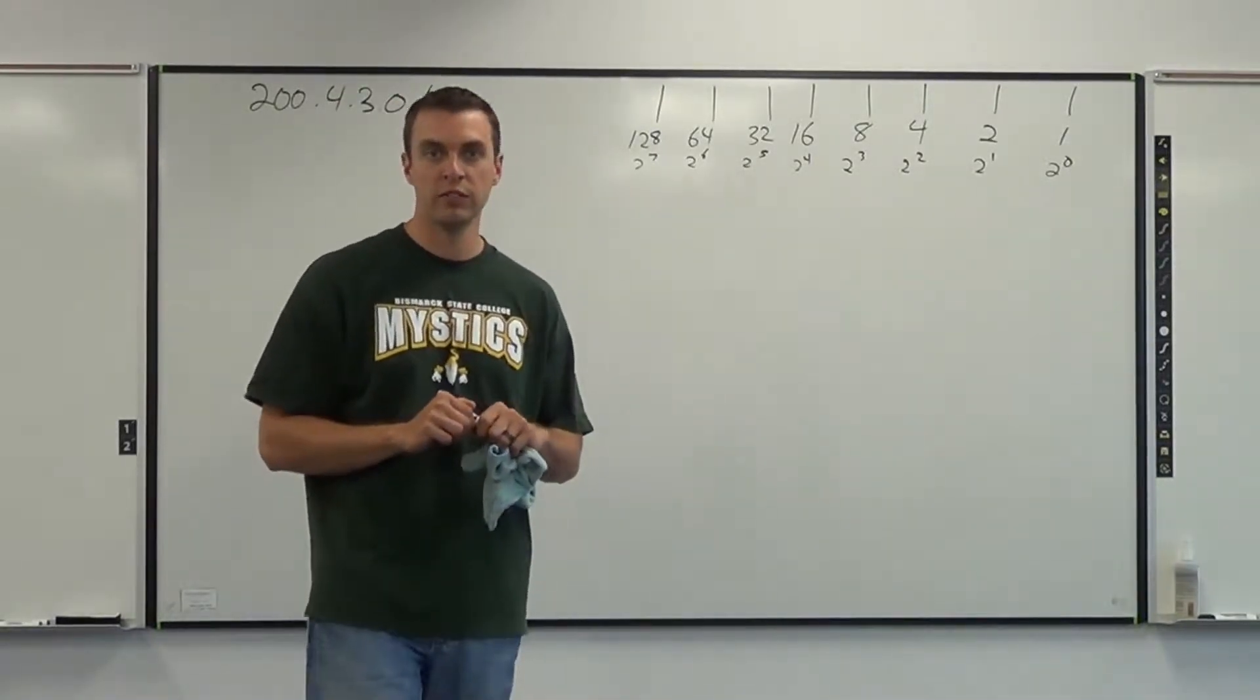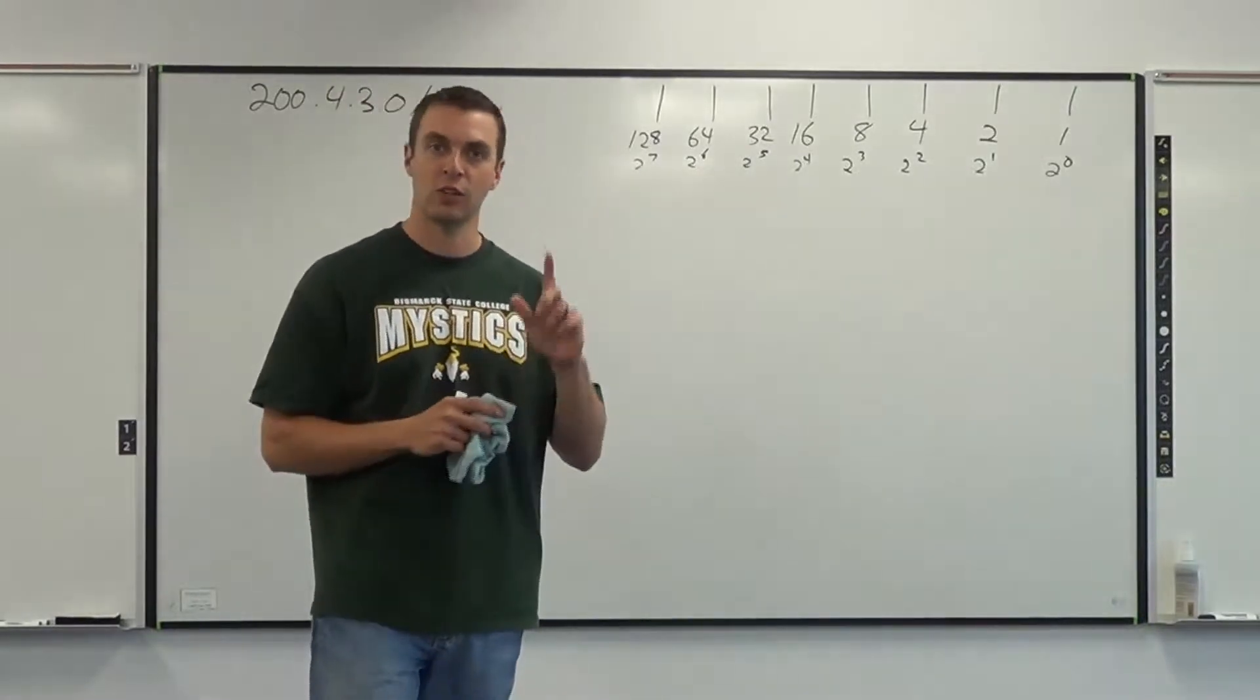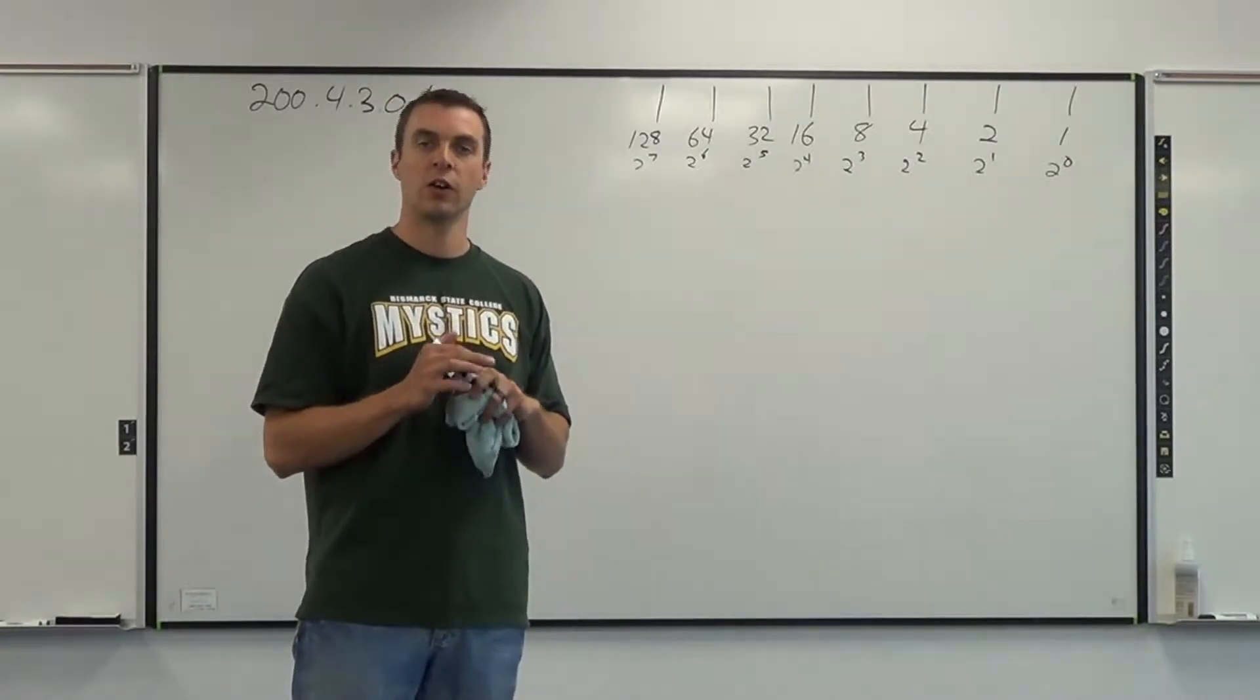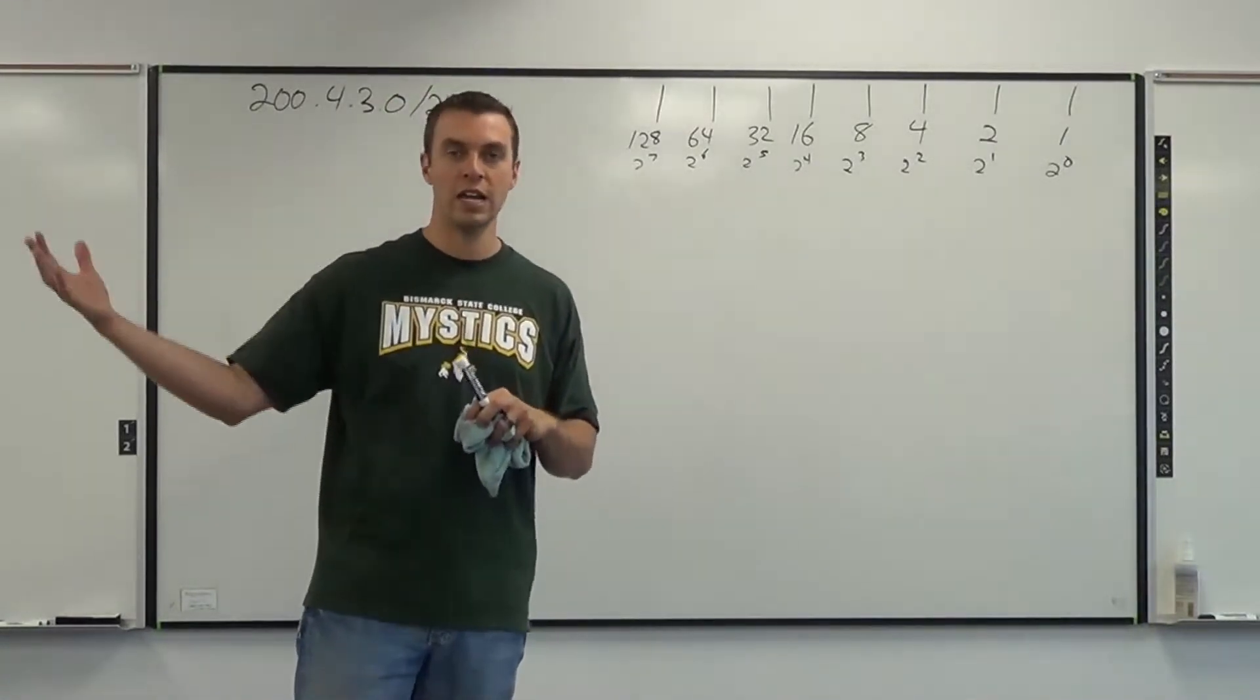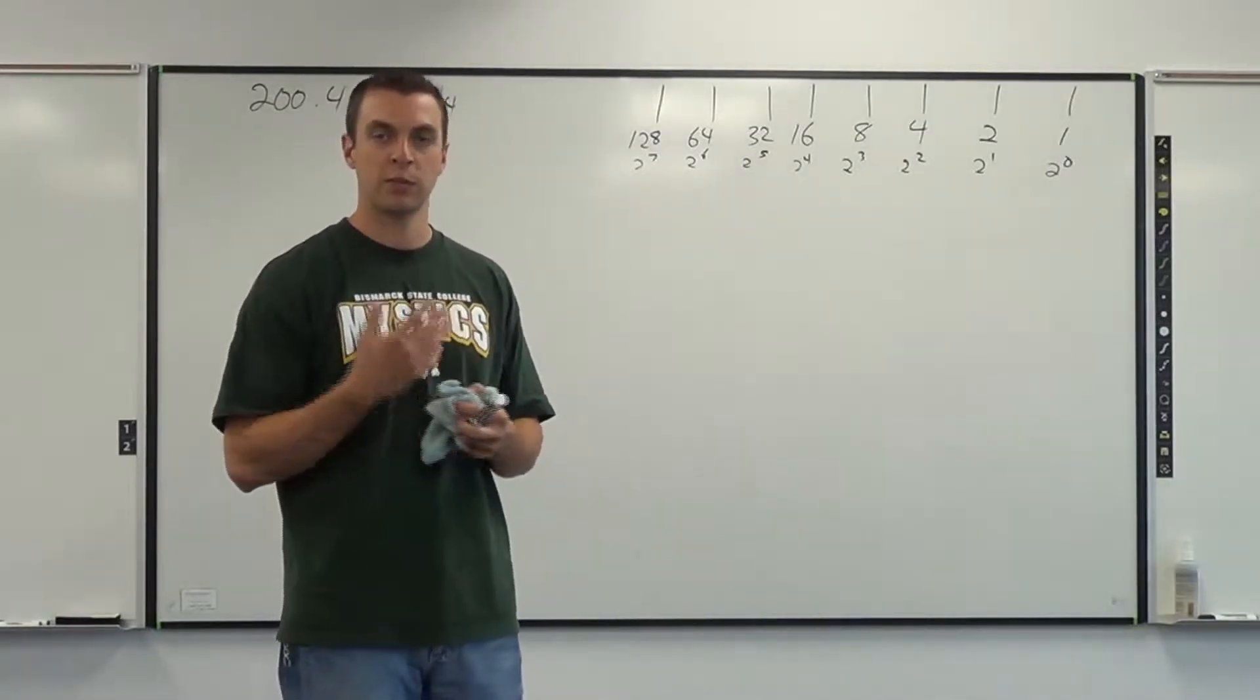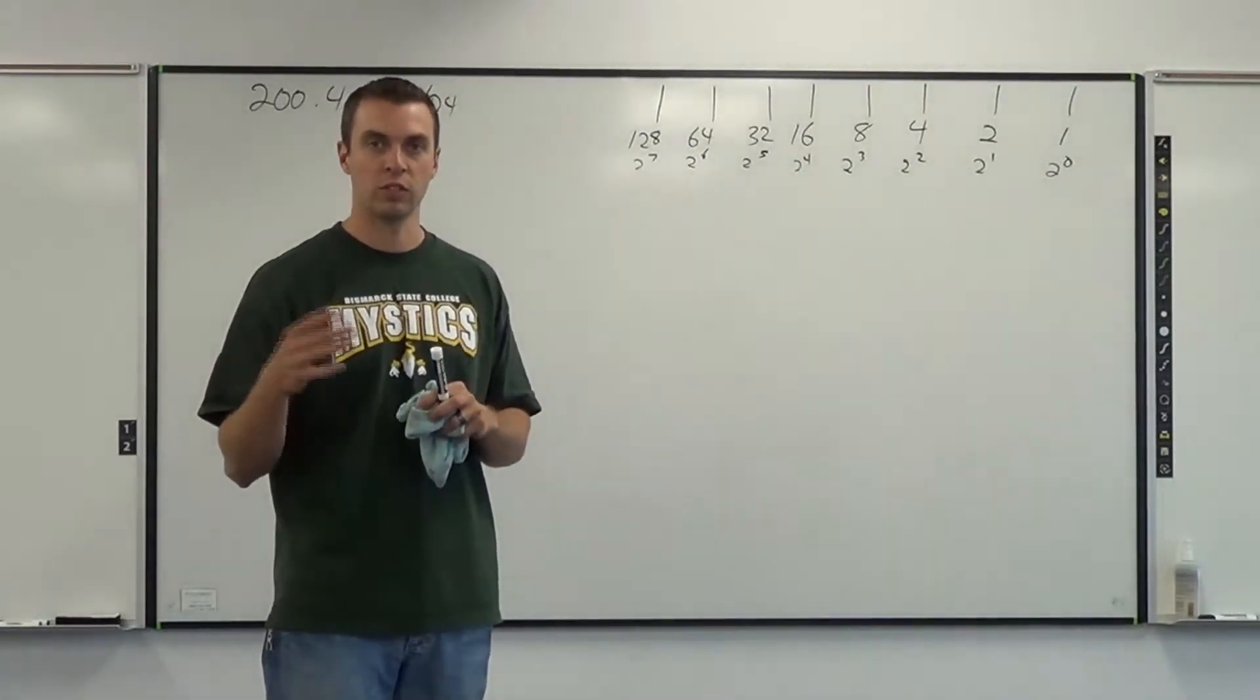If you remember from the previous video, the subnetting by location video, I said that locations are ones on the left-hand side of the line, and PCs or hosts are zeros on the right-hand side of the line. Our method is essentially the same, except we're going to be working right-hand side of the line now, and we're going to be working with zeros.